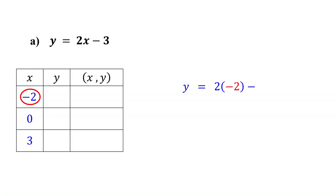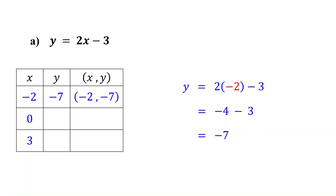Begin by substituting negative 2 for x and solving for y. 2 times negative 2 is negative 4. This equals negative 7. So, when x is negative 2, y is negative 7. Therefore, negative 2 comma negative 7 is our first point.